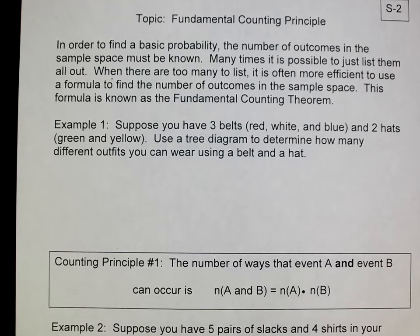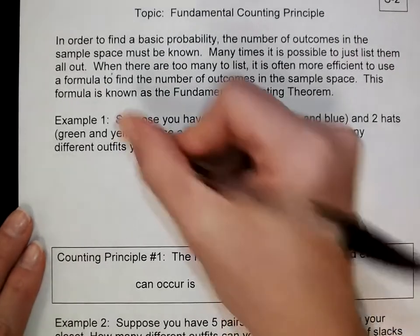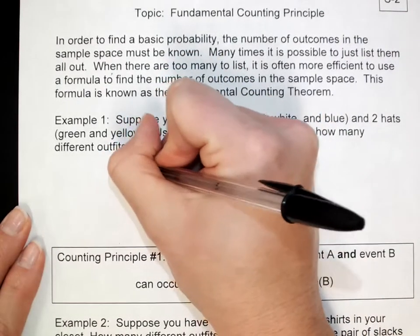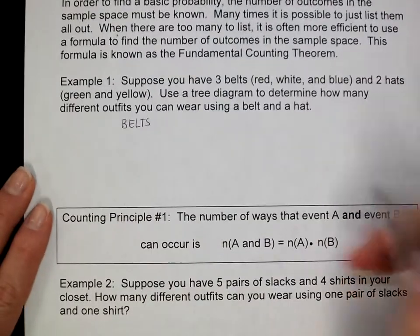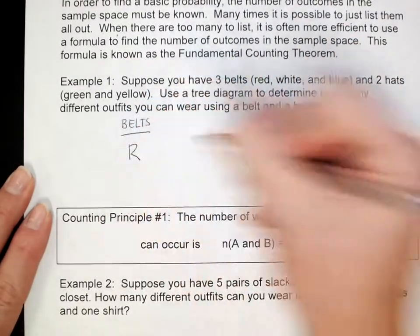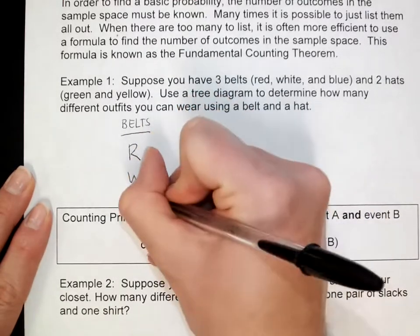Here's our first example. You have three belts - red, white, and blue - and you have two hats, green and yellow. First they want you to use a tree diagram to determine how many different outfits you can wear using a belt and a hat. So the first thing I'm going to use are our belts. You have three possibilities: red, white, and blue.